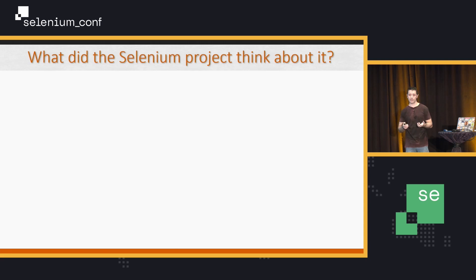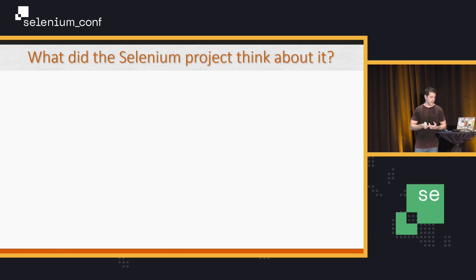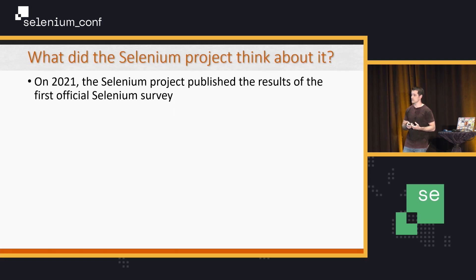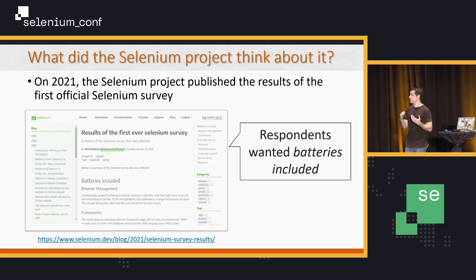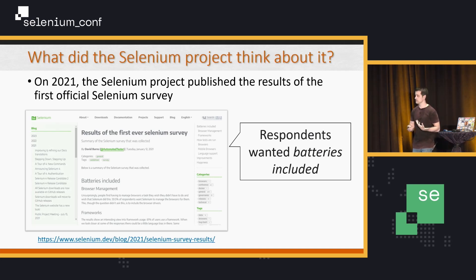For many years, the Selenium project said it was not a 'batteries included' library, so the driver problem was left to third-party tools like WebDriver Manager. But in 2021, this started to change. The Selenium project, led by David Barnes, created a survey about the needs of Selenium and published the results in the official Selenium blog. The results clearly showed that respondents wanted driver management and browser management to be done automatically by Selenium — they wanted batteries included. That was one of the most important conclusions of that study.